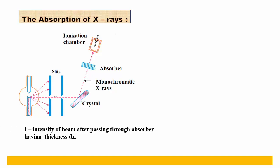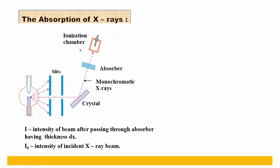We define I as the intensity of the beam after passing through the absorber having thickness dx, and I₀ as the initial intensity of the x-ray beam. The decrease in intensity is given by the equation: dI = −μ · I · dx, where μ is the linear absorption coefficient, which depends upon the wavelength of x-rays used and the nature of the absorbing material.